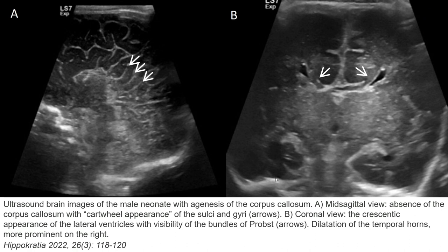This is the second case, also showing agenesis of the corpus callosum, where the image is a mid-sagittal view. The corpus callosum and the mid-callosal appearance of the sulci and gyri are absent. The appearance of the lateral ventricles shows visibility of the bundle of ropes.